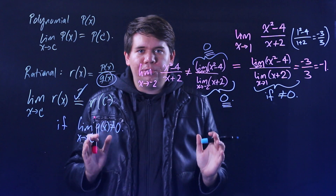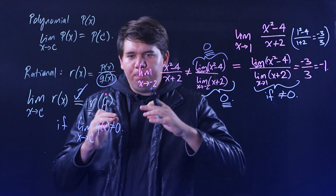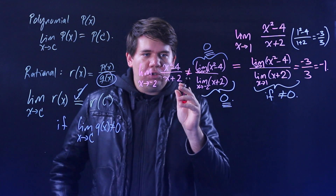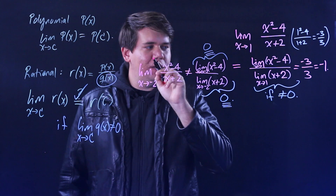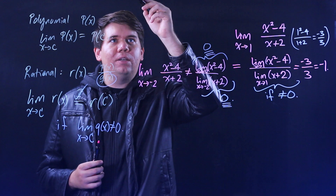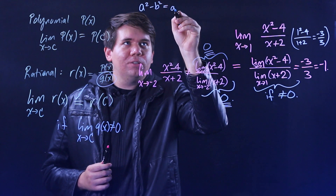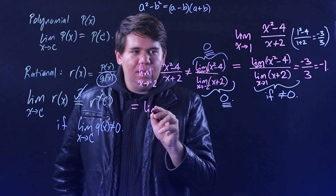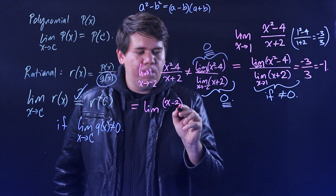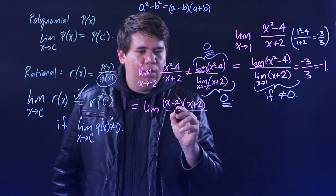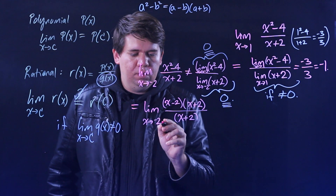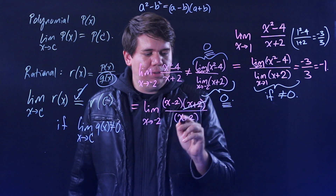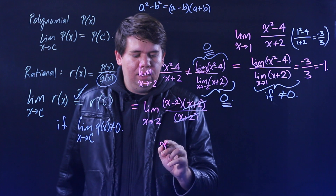There's probably some sneaky algebraic trick you can do to resolve or eliminate the division by 0. Looking at this, what algebraic trick can you use? It screams out: factor. You have x squared minus 4. You remember from high school that a squared minus b squared factors as a minus b times a plus b. So x squared minus 4 is just x minus 2 times x plus 2, all over x plus 2. Then x plus 2 on top and x plus 2 on bottom cancel, leaving just x minus 2.